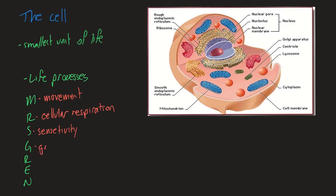G is for growth — cells are capable of growing. R is for reproduction. E is for excretion, the removal of waste. And N is for nutrients — the ability to take nutrients into the cell for the life processes.